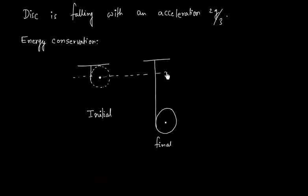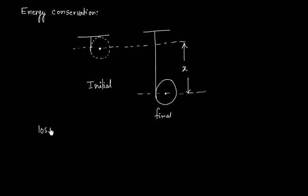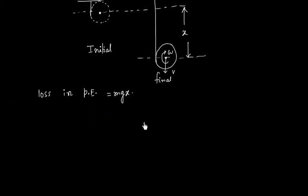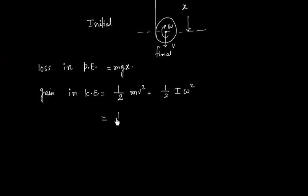So there is a loss of potential energy. Let us say this height is X, so we can say loss in potential energy equals Mgx. Now there is a gain in kinetic energy, one due to translational motion, another due to rotational motion. So we can say gain in kinetic energy is half Mv squared plus half I omega squared.